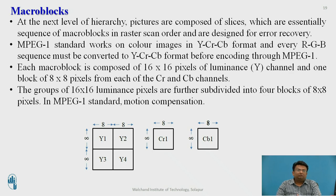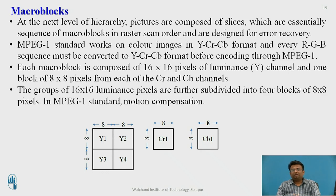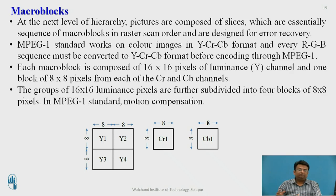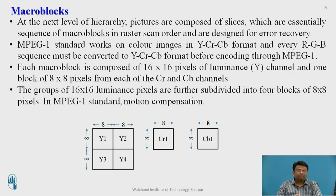At the next level of hierarchy, pictures are composed of slices, which are sequences of macroblocks in raster scan order, designed for error recovery. Each macroblock is composed of 16×16 pixels of luminance and one block of 8×8 pixels from each of the Cr and Cb channels. The 16×16 luminance block is further divided into four blocks of 8×8 pixels.